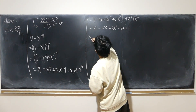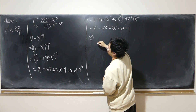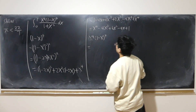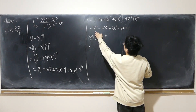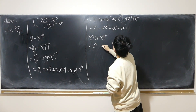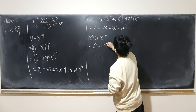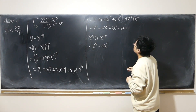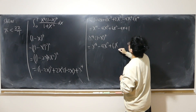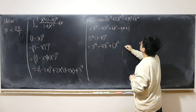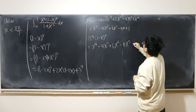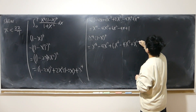Now I multiply by x^4 on each term, giving: x^8 minus 4x^7 plus 6x^6 minus 4x^5 plus x^4.